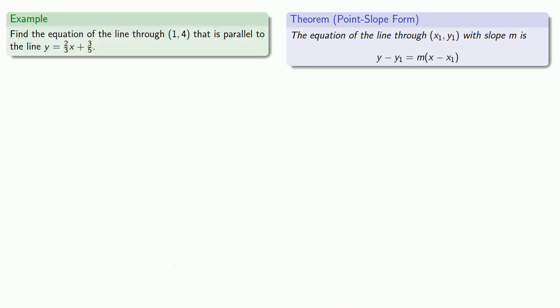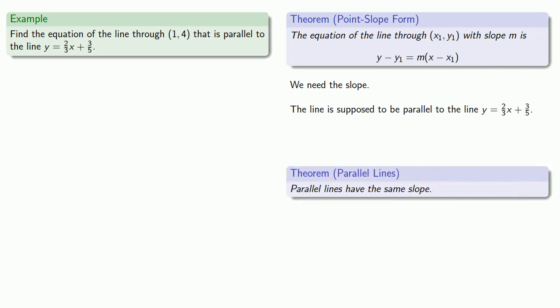So we might be given a point and some condition on the slope. We know what the point is, we just need the slope, but we don't have it. What we do know is the line is supposed to be parallel to another line. And that tells us something useful, because we know something about the slopes of parallel lines. Parallel lines have the same slope.